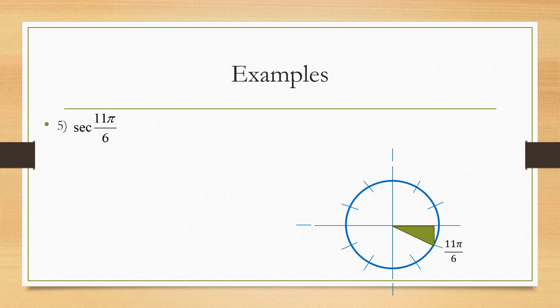Secant is the inverse of cosine. Cosine is the adjacent side — there it is. So all we have to do is flip that answer, which gives us two radical three over three.